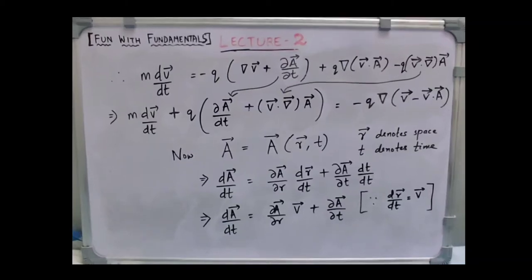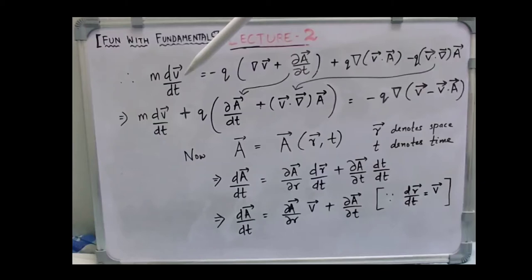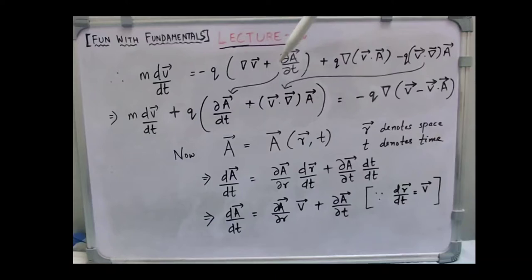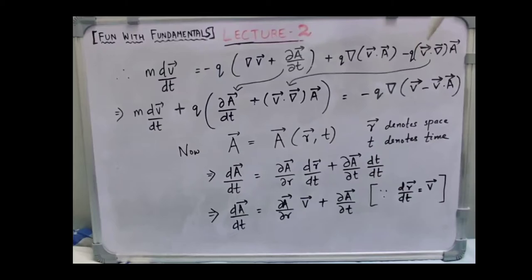Putting the expression for the vector identity back into the equation, we get m times the time derivative of velocity of the charged particle is given by minus q times gradient of V plus partial derivative of the magnetic vector potential with respect to time, plus q times gradient of V dot A, minus q times V dot gradient times A.